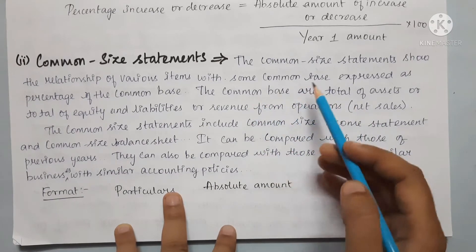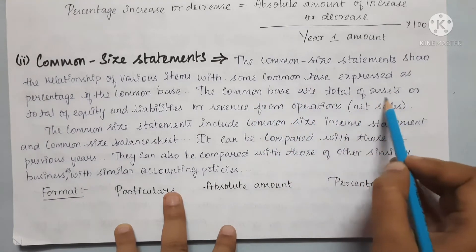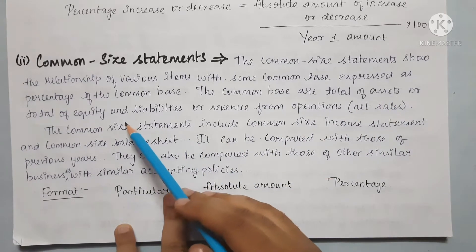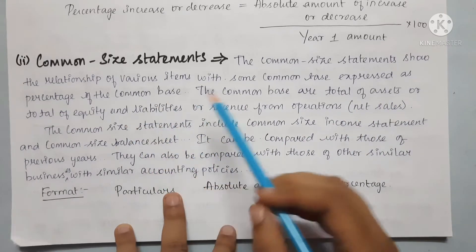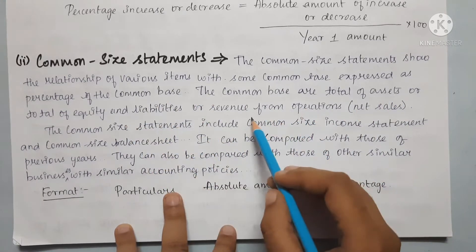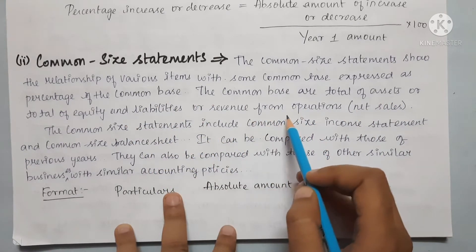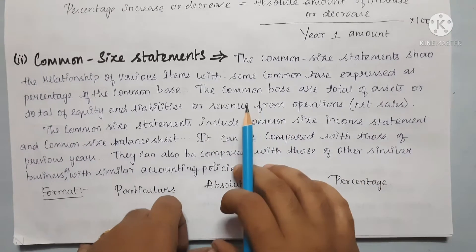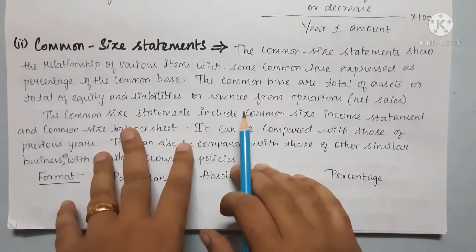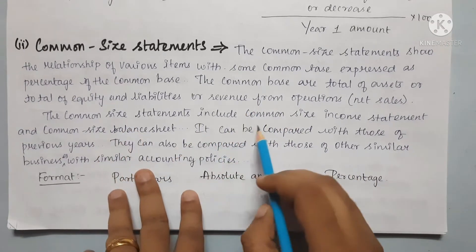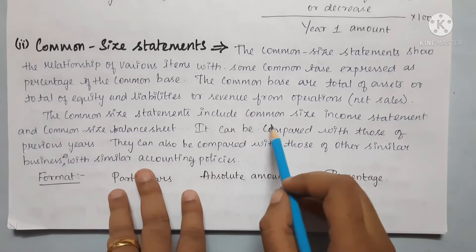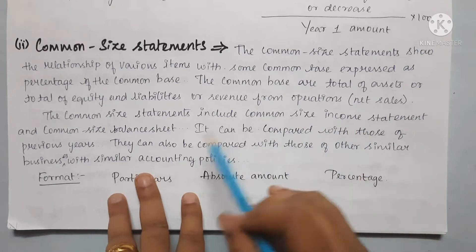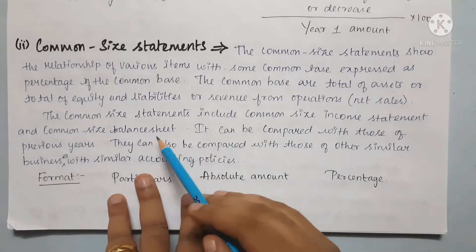So, if you have a common base, you will have assets, or equity and liability, or revenue from operations. The common-size statement includes the common-size income statement and the common-size balance sheet.